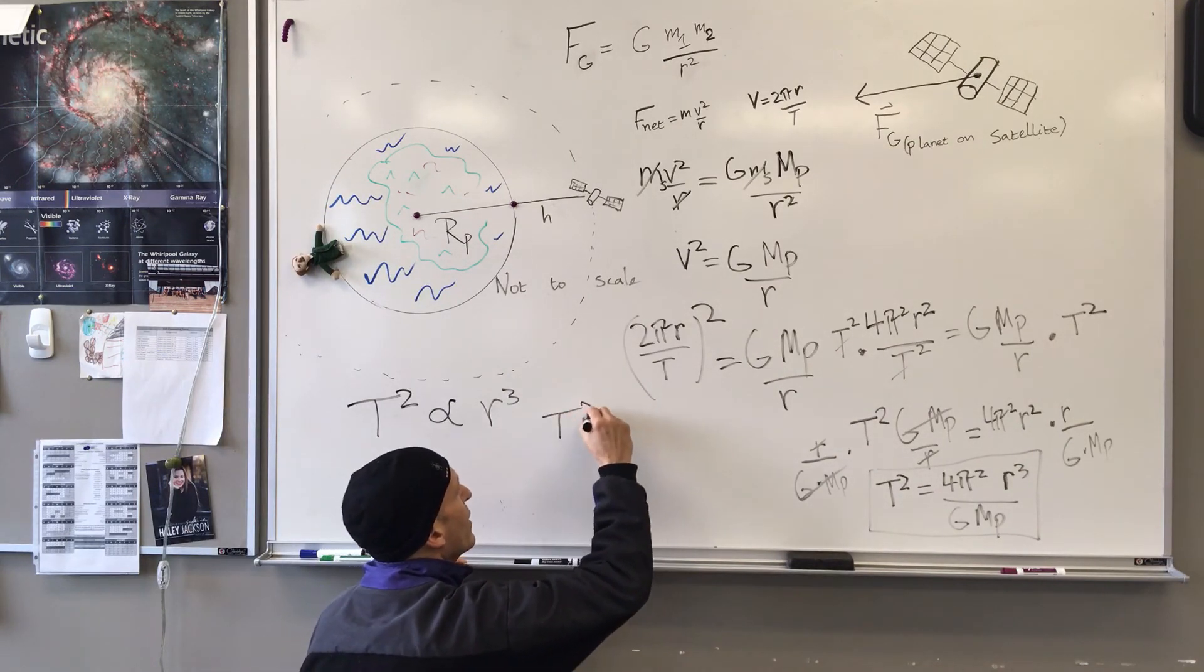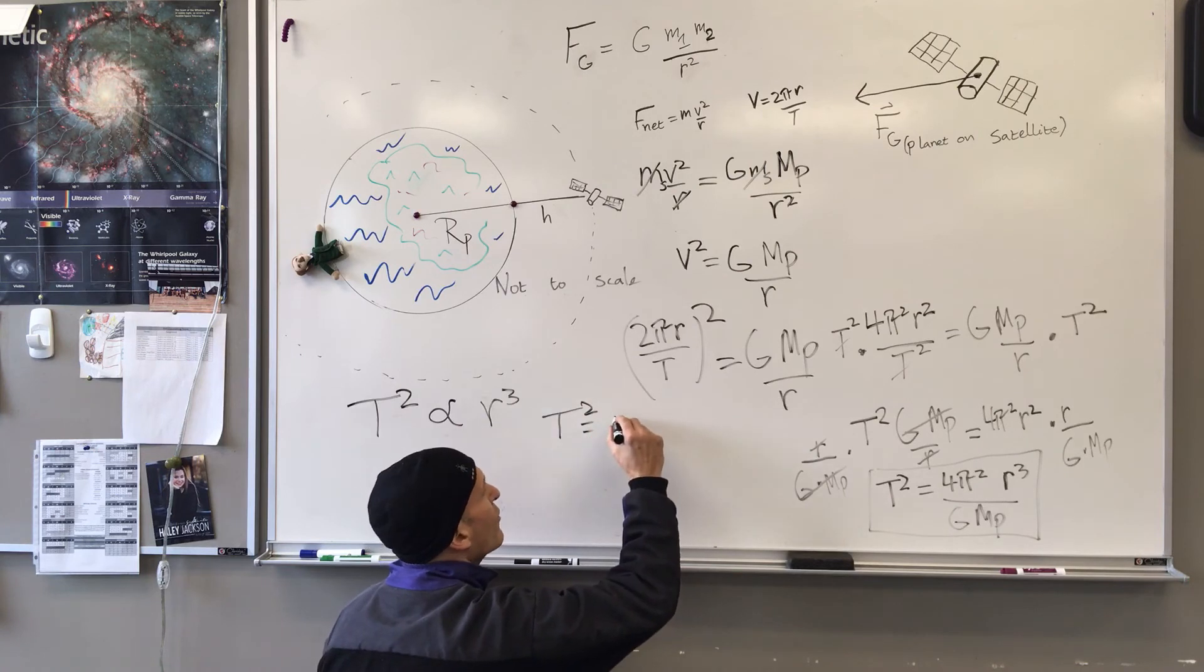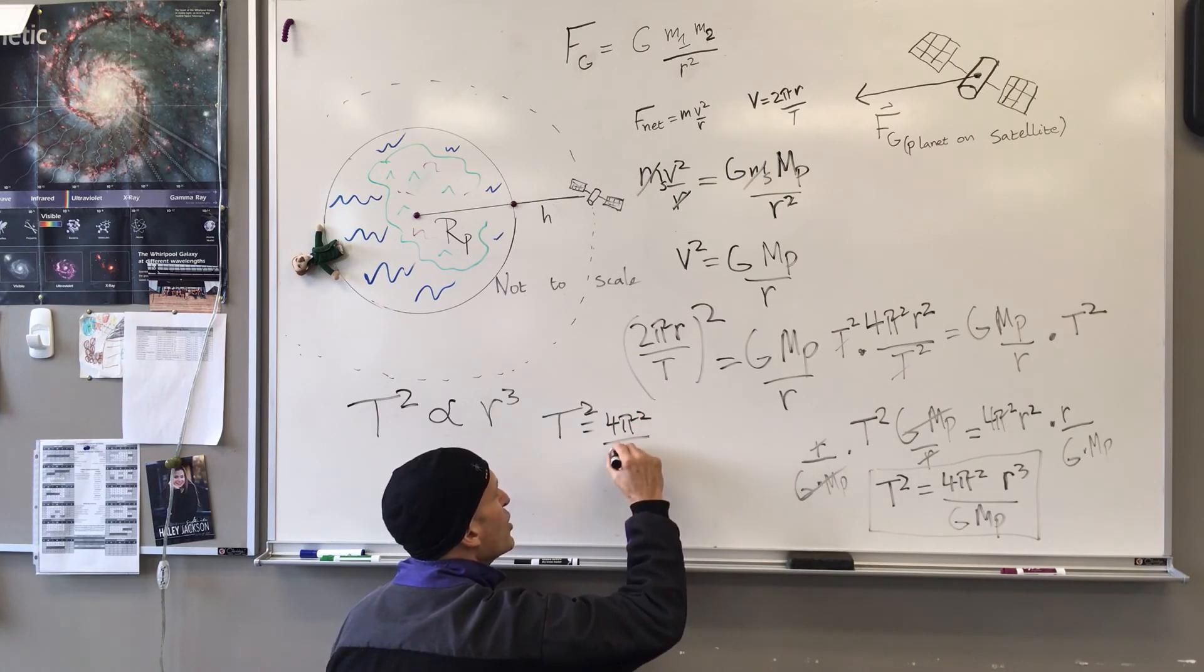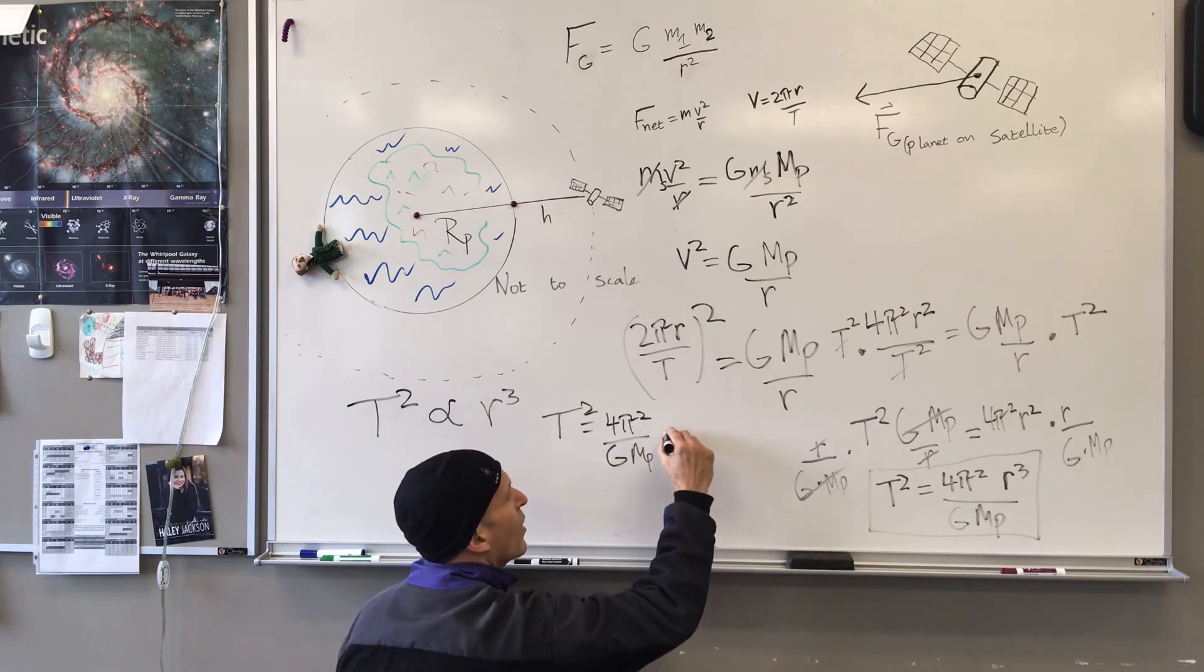T squared equals 4π squared over G, mass of the planet, times R cubed.